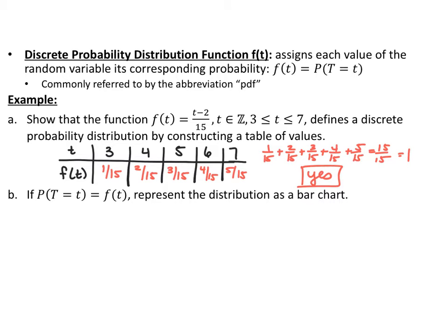So the probability that t = 3 is 1/15, the probability of 4 is 2/15, and so on. If this probability distribution works for the entire domain of 3 to 7, it should include all possible probabilities, which means they should add up to 1. Since this does add up to 1, this is in fact a probability distribution.